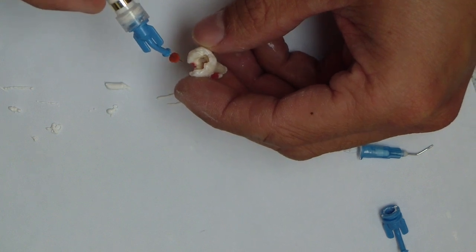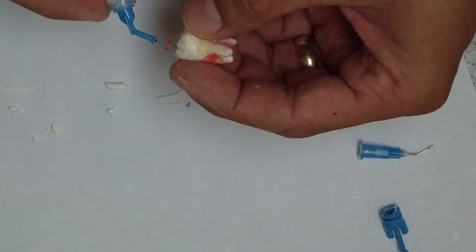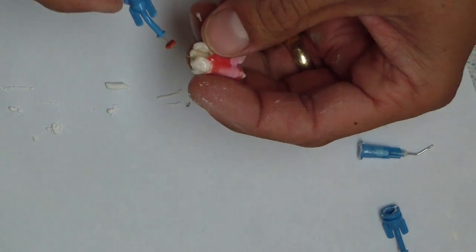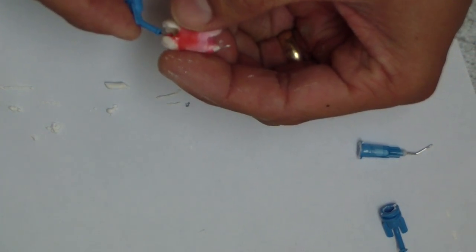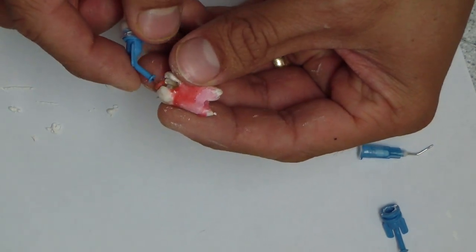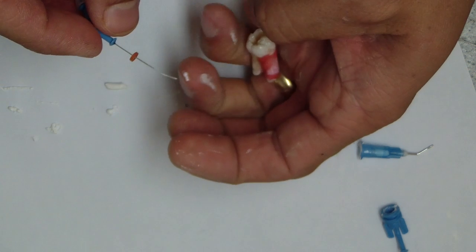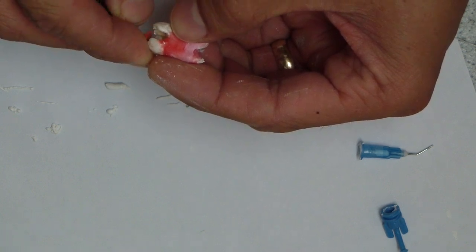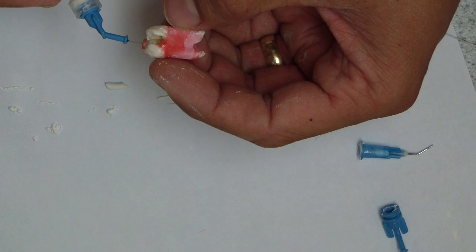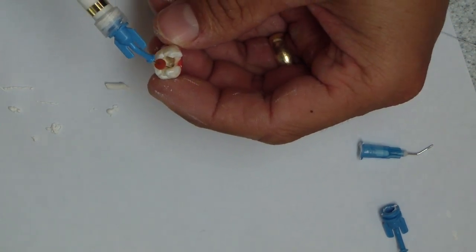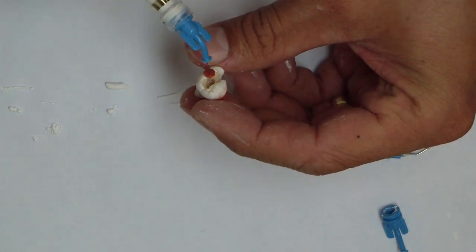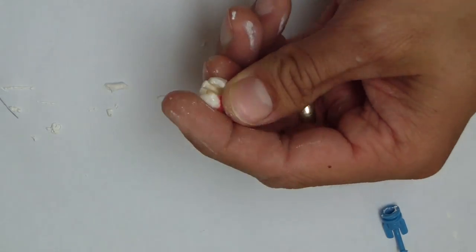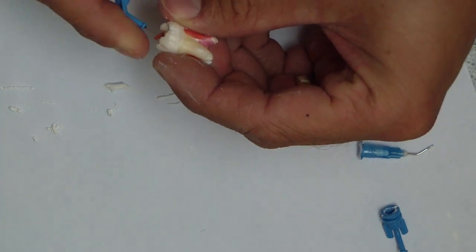Let's go with the mesial buccal canal. One thing to watch—it's a small canal, and these tips are flexible, bendable. Let's place it in there, and you can see it extrude out the end. That's an important point: you need to make sure you're not going to extrude beyond your apex. Let's do it tabletop style—pull back two millimeters from there, then extrude. We'll show you from the coronal portion what it looks like.